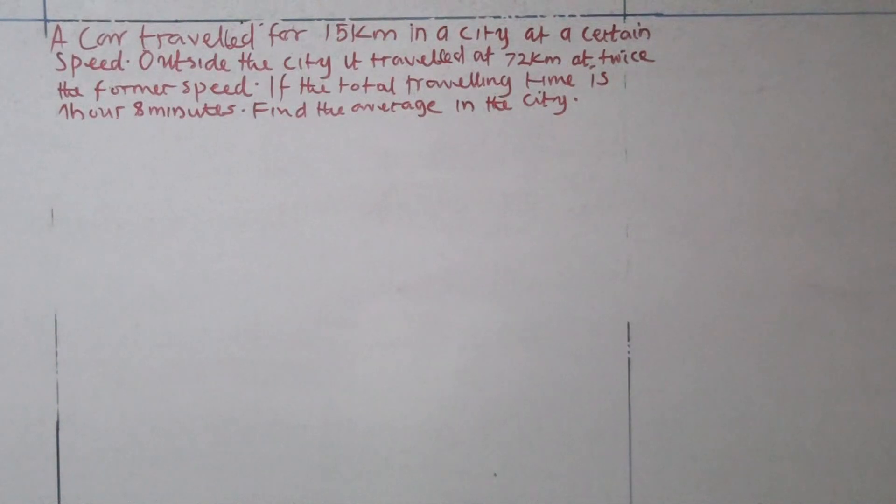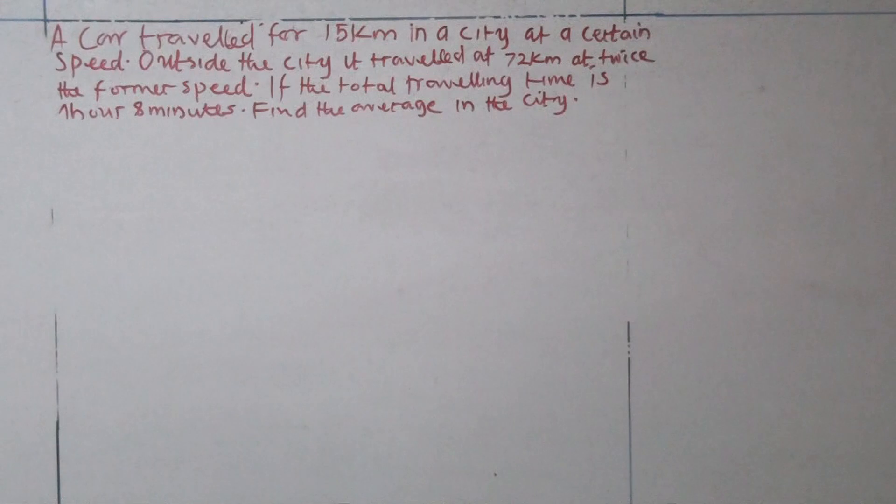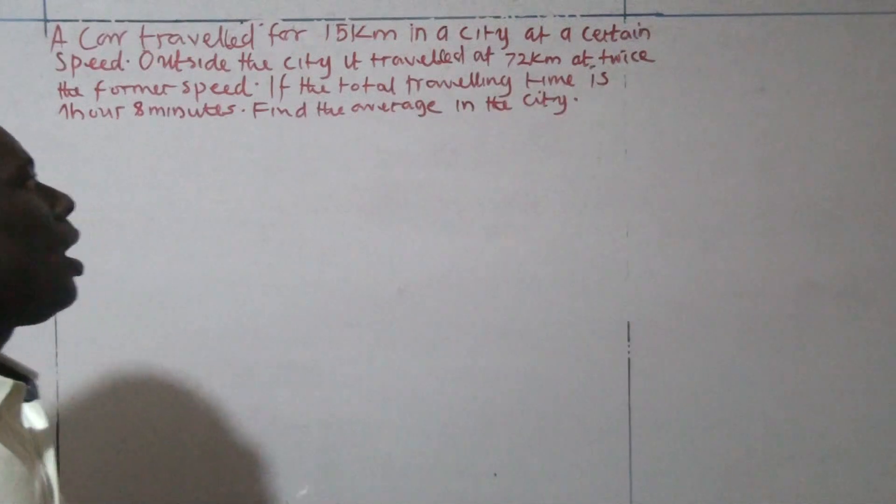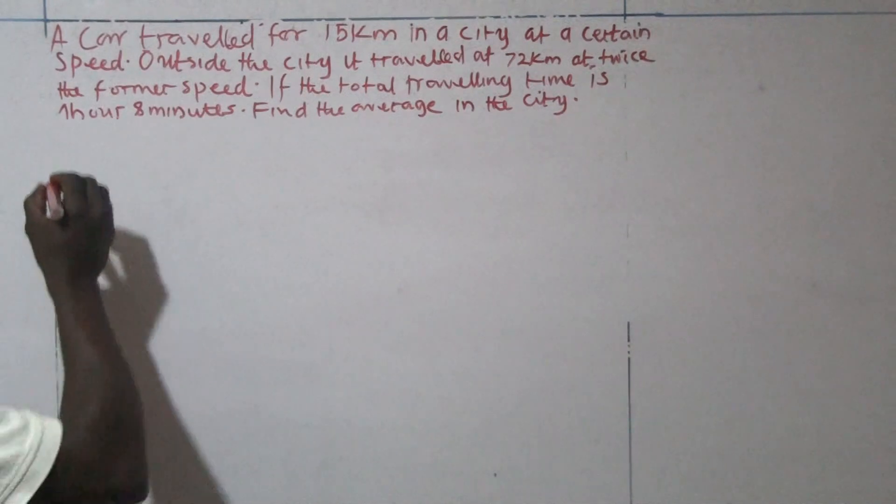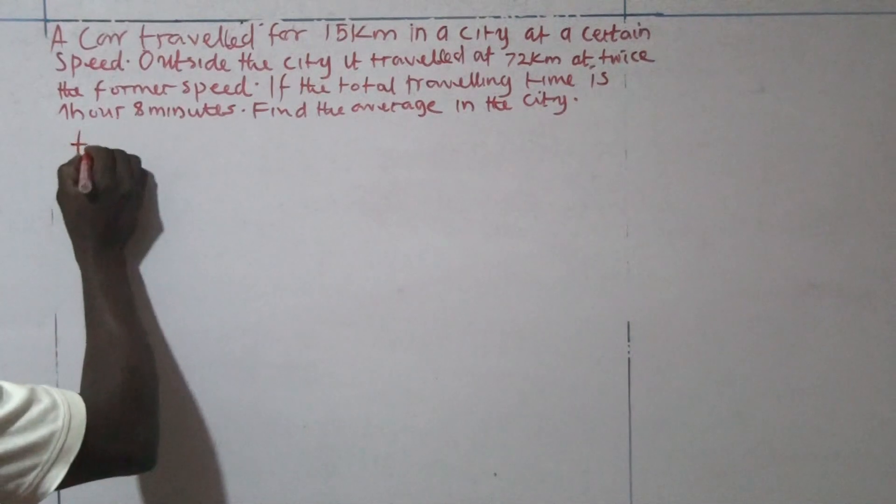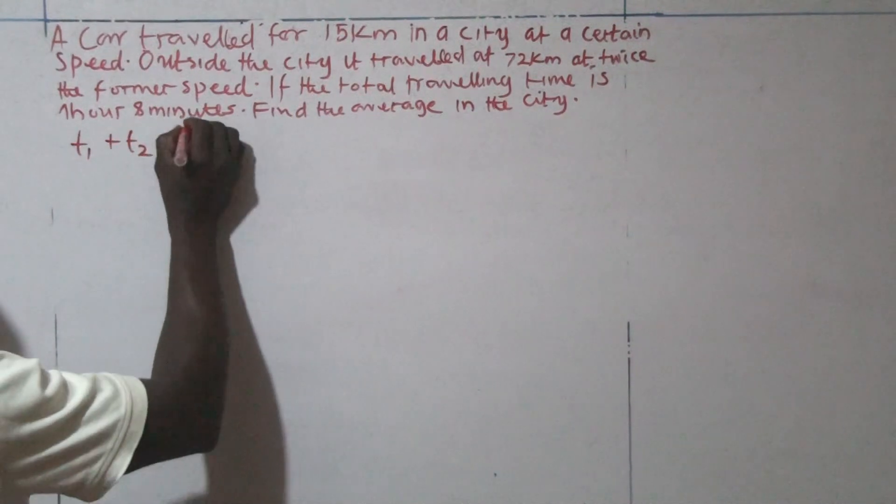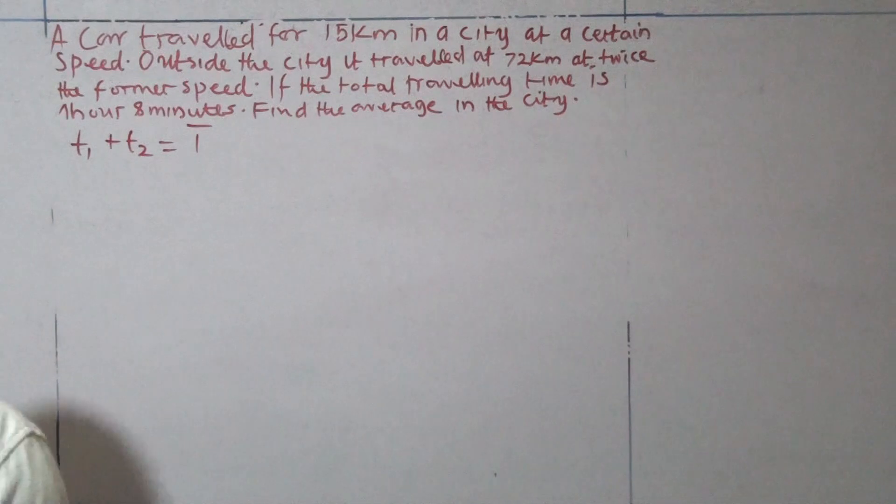Looking at this question, the first thing you need to do is transform this algebraic sentence into algebraic equations. First, we must know the formula for speed. Then, we look at this part of the sentence: if the total time is one hour eight minutes. That means time here is very crucial. So we have two times, the first part of journey T1 and the other part T2, is equal to the total time. So that's the first thing we must do here.